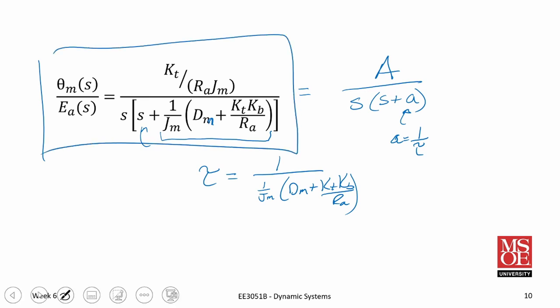Likewise, if we wanted to find the angular velocity as a function of the applied voltage, we could multiply both left-hand and right-hand sides of the transfer function equation by S, and that would give us the angular velocity transfer function.